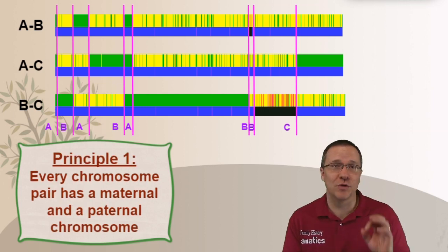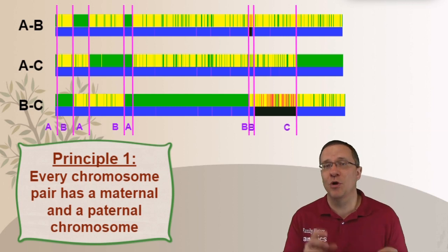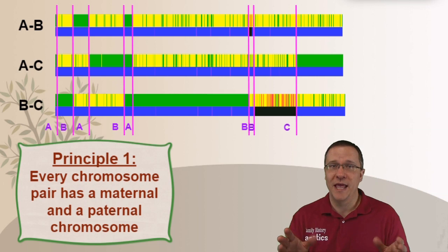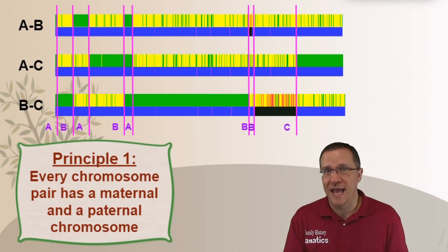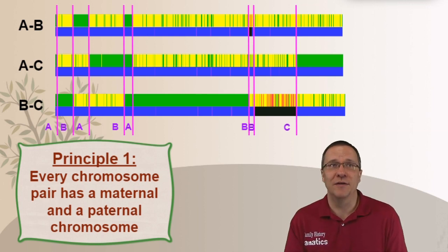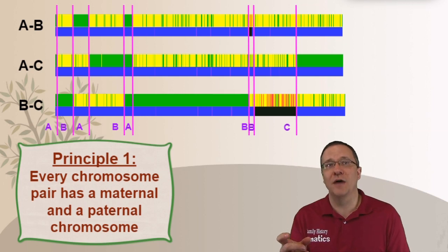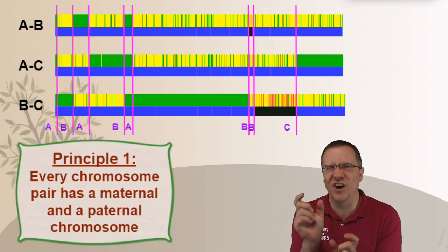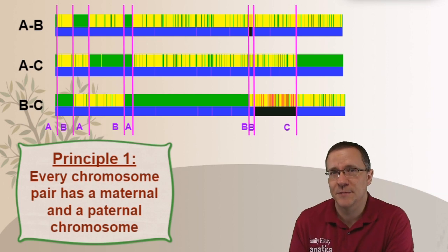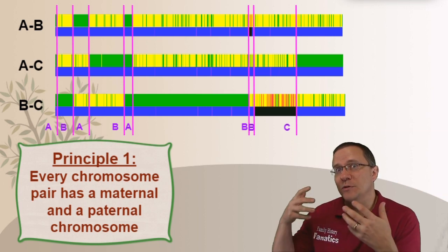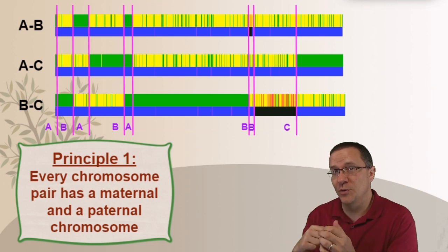The first principle of creating segments is that every chromosome pair has a maternal chromosome and a paternal chromosome. Those chromosomes are separate from each other and they don't intermix. So you're not going to have a segment of your paternal grandmother right next to a segment of your maternal grandmother — that just can't happen because they're on separate chromosomes. So while we are looking at one graph for each pair of people, we're actually going to create segments for six different chromosomes — two chromosomes for each person.